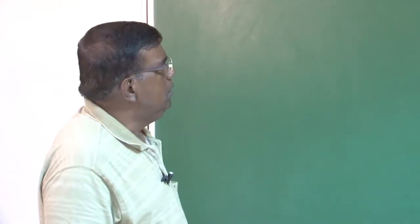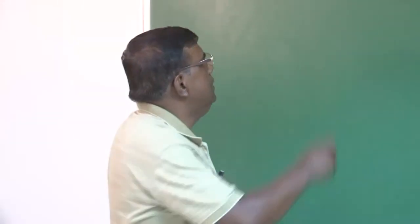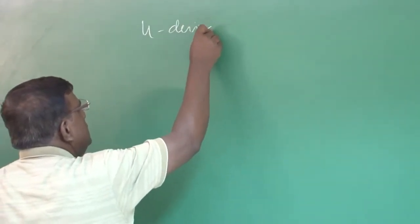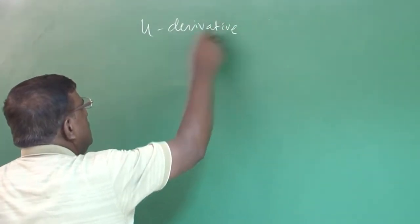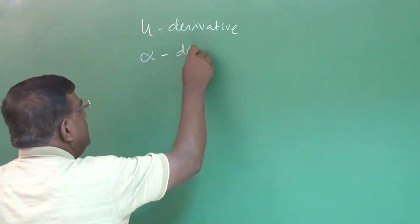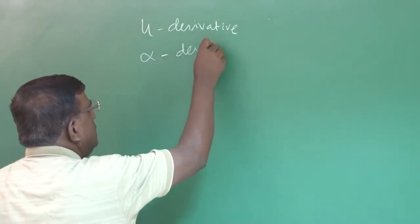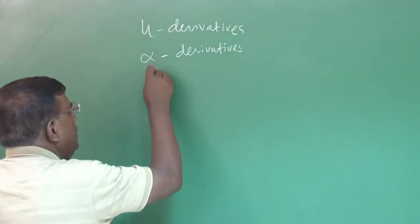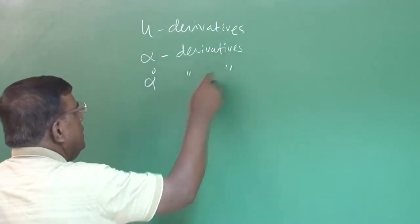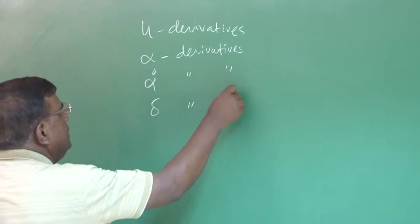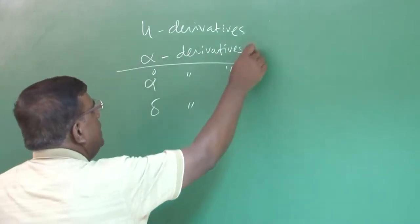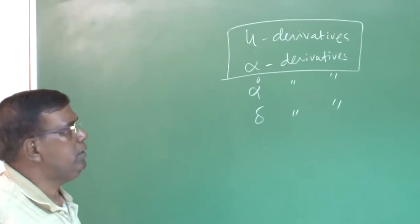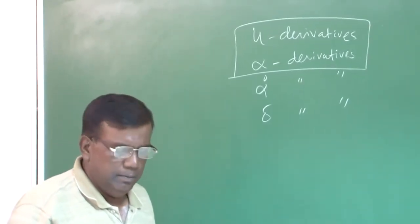If you recall, we had u derivative, we have alpha derivatives, then alpha dot derivatives, then delta derivatives — we have completed up to this. Today we will be discussing about the alpha dot derivative.